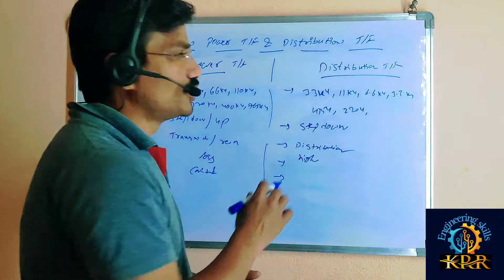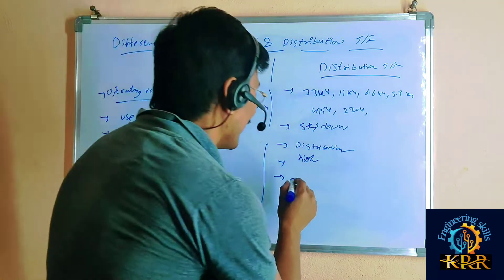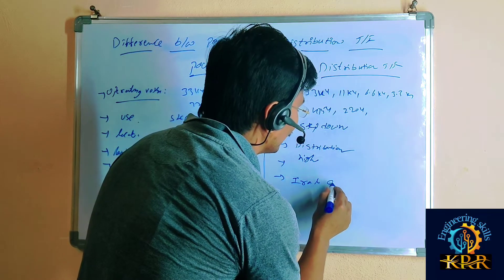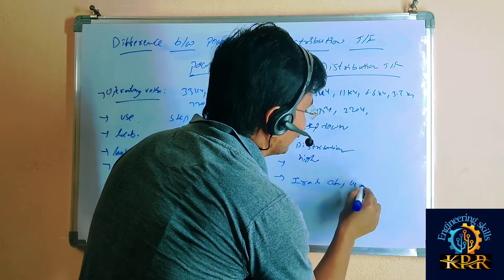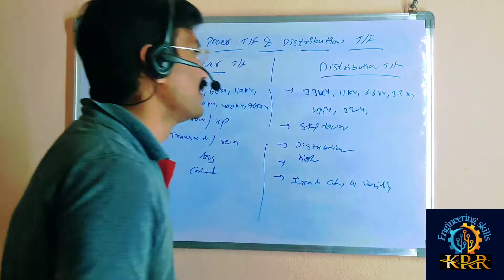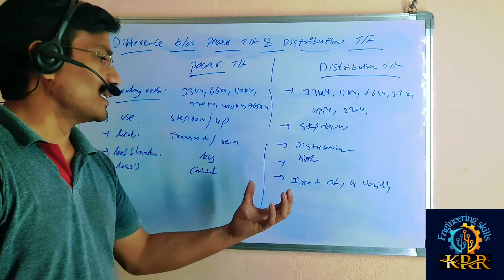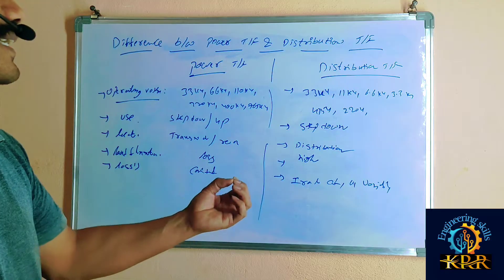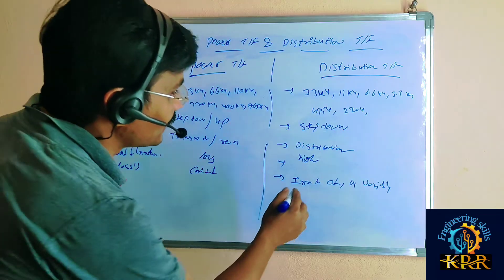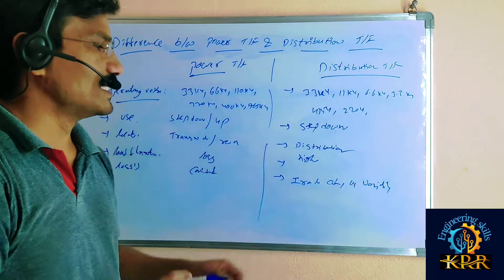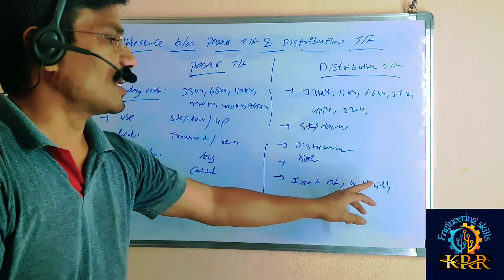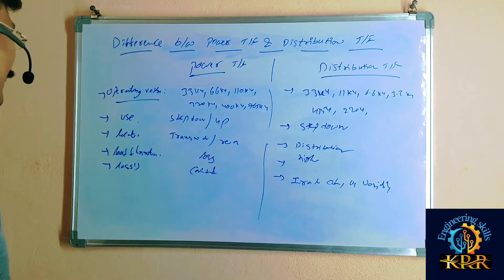If you go for the distribution transformer, the iron losses are constant, but the copper losses are variable. This is because on the load side — the receiving end side, which is the distribution area side — the voltage is constant but the load is varying. That is the reason the iron losses are constant and the copper losses are varying.